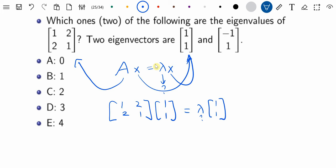So to do matrix multiplication, row times column, row times column, so it's 1 plus 2 is 3, and 2 plus 1 is also 3, is equal to lambda times 1, 1. So this lambda is equal to 3. So this is an answer.